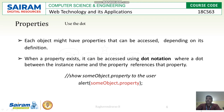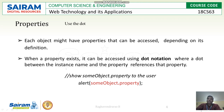Each object might have properties that can be accessed depending on its definition. If properties exist, they can be accessed using the dot notation. For example: alert(someObject.property) — this is the syntax used to access a property.